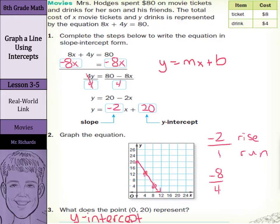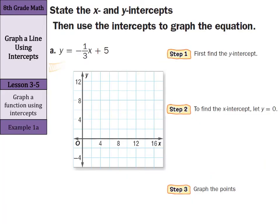Let's move on to our lesson. All right, in our first example, we're going to state the x and y-intercepts, then use those intercepts to graph the equation. We have y equals negative 1 third x plus 5. Our first step is going to be to find the y-intercept.